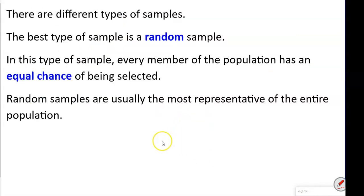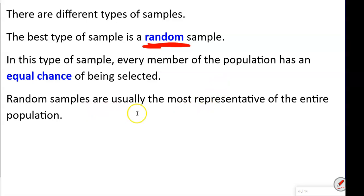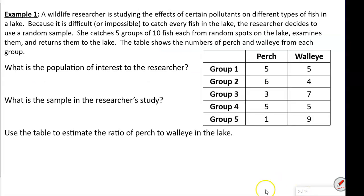There are different types of samples. The best type is the random sample. In this type of sample, every member of the population has an equal chance of being selected. Random samples are usually the most representative of the entire population.